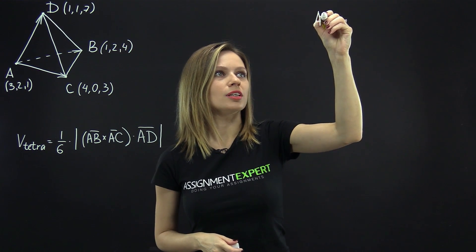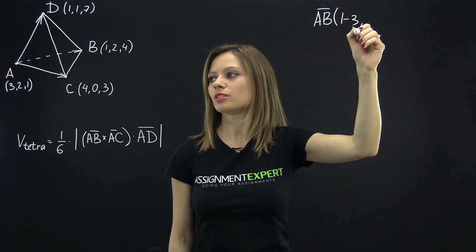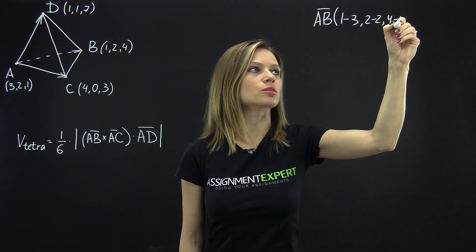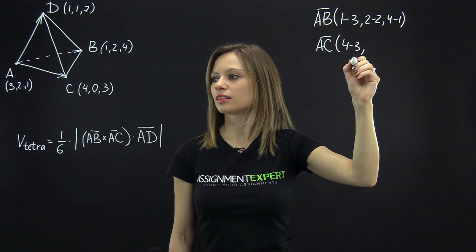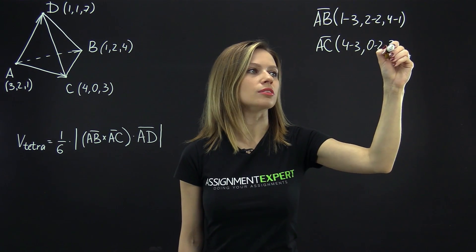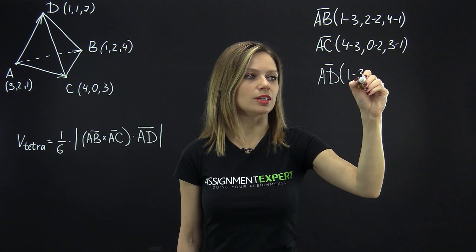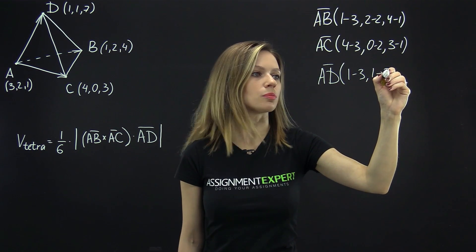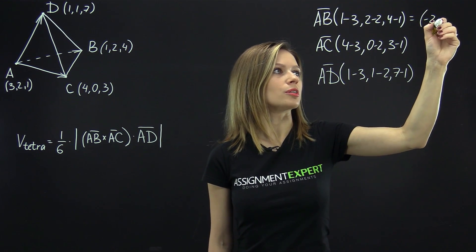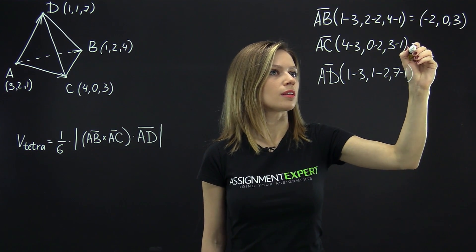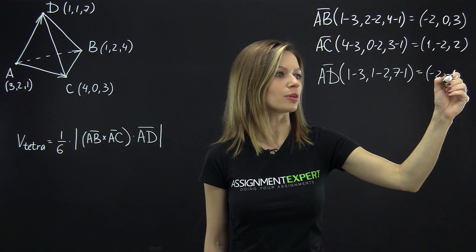We have that AB has coordinates: 1 minus 3, comma 2 minus 2, comma 4 minus 1. AC has coordinates: 4 minus 3, comma 0 minus 2, comma 3 minus 1. And AD has coordinates with the final component 7 minus 1. Calculating these, we get AB = (-2, 0, 3), AC = (1, -2, 2), and AD = (-2, -, 6).